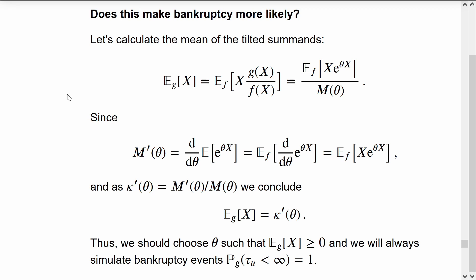Substituting in the specific form of G, which is the exponentially tilted version, we get the new mean under G in terms of a mean under F of X e to the theta X. This mean on the right is actually the derivative of the moment generating function.